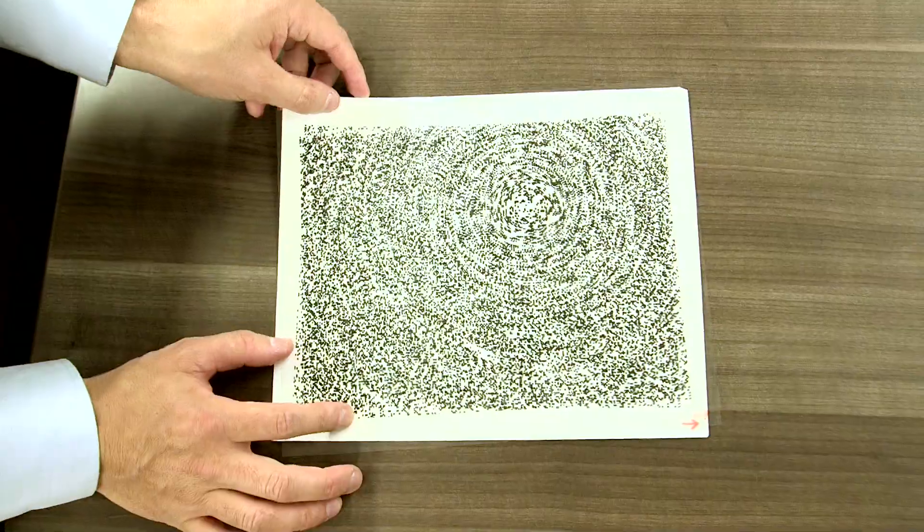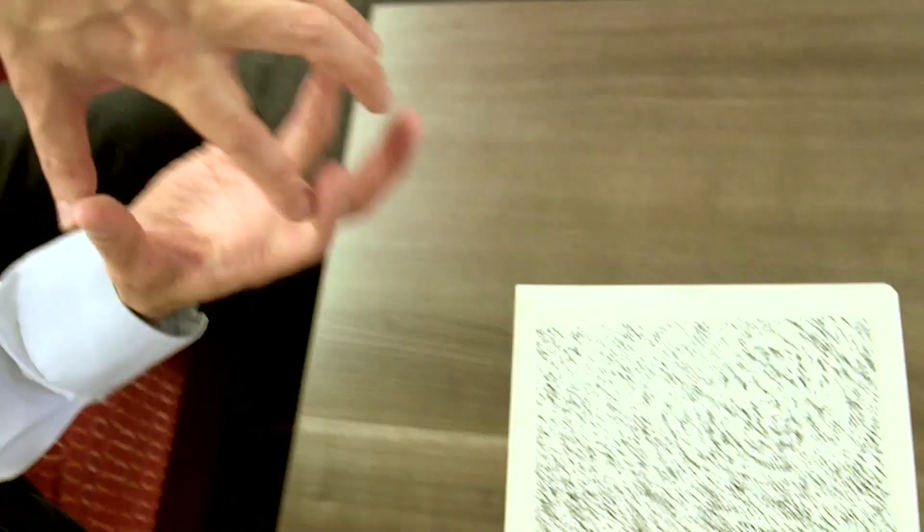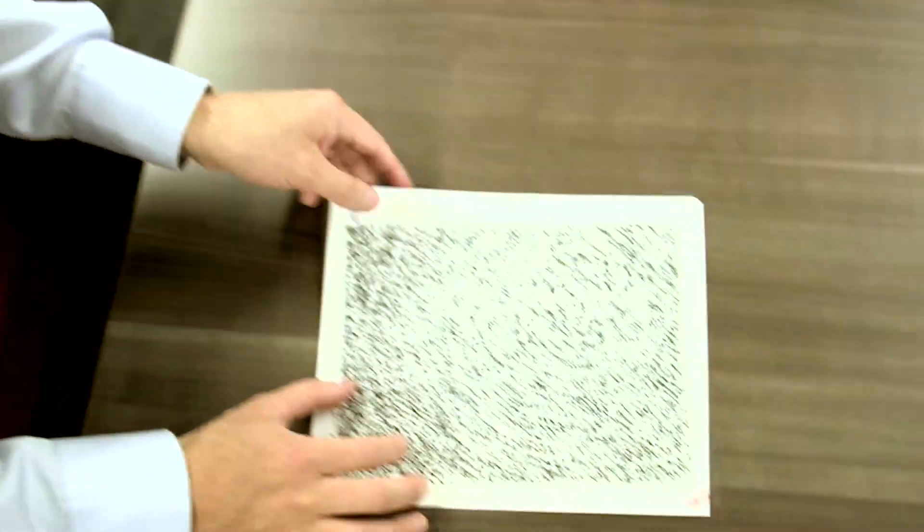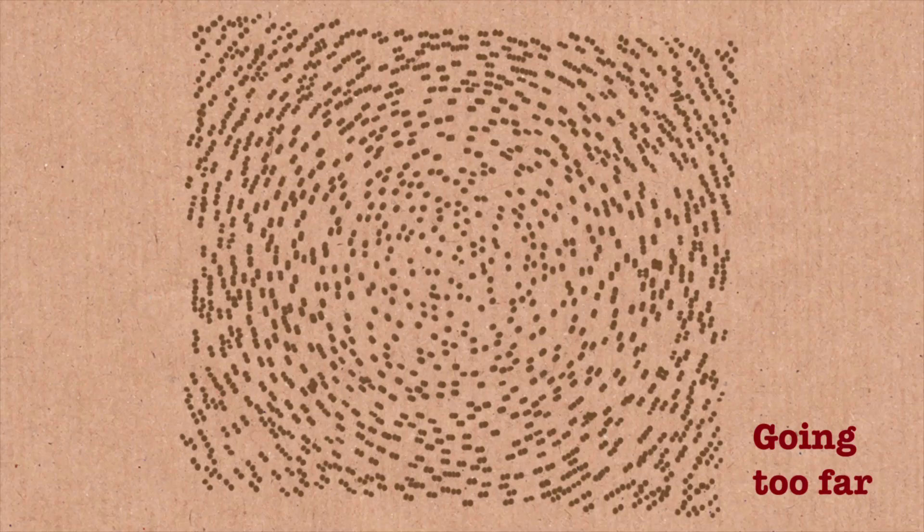So if you rotate them too far, the images and originals get too far and they lose all correlation and you don't see anything.